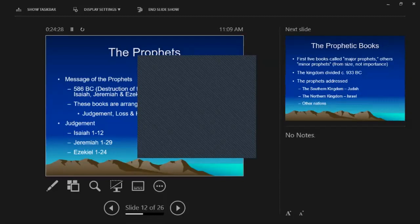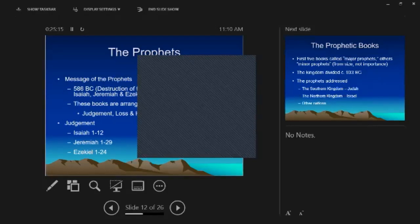Chapter 3: God tells Ezekiel to eat the scroll — similar to Jeremiah. He tells them they're not going to listen to you, similar to Jeremiah as well. Chapter 3 verse 7: 'For the whole house of Israel is hardened and obstinate.' But God says, 'I will make you as unyielding and hardened as they are — I will make your forehead like the hardest stone.' From our days in Kenya, one lesson learned: we have to be tough-skinned but tender-hearted. Like rhino hide tough on the outside, but remaining tender-hearted — that's a paradox not easy to maintain.